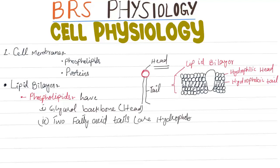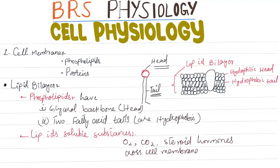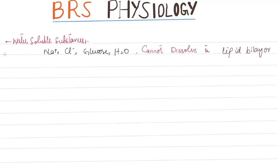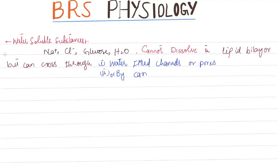Lipid-soluble substances like oxygen, carbon dioxide, and steroid hormones cross the cell membrane because they dissolve in the lipid bilayer. Water-soluble substances, for example sodium, chloride, glucose, and water cannot dissolve in the lipid bilayer but can cross through water-filled channels or pores, or by carriers.